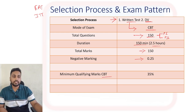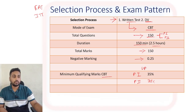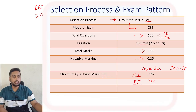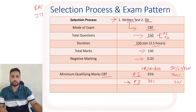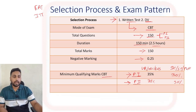Each wrong answer will deduct 0.25 marks — negative marking is there. For qualifying the CBT, you have to cross 35% in both Part 1 and Part 2. This 35% is for UR, OBC, and EWS categories. For SC/ST and PwBD candidates, they have to get at least 30% in both parts. If you have not qualified in any one part, you will not get selected. Both parts must be cleared. Note that qualifying marks and cut-off marks are different — the cut-off will be decided after the written exam.